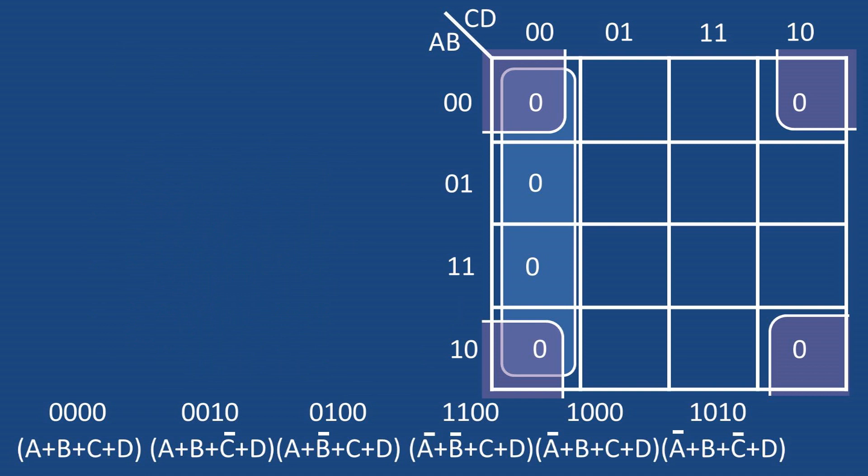So now you're probably thinking great, I know how to group values together, what is this used for? We can use this to reduce to the minimum product of sums expression. The way we do this is by finding the variables that do not change inside each box.